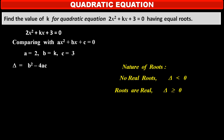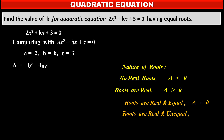There are two options: either delta is greater than 0, or it is equal to 0, depending on whether the real roots are equal or unequal. If the roots are real and equal, then the discriminant delta is equal to 0. If the roots are real and unequal, then the discriminant delta is strictly greater than 0.